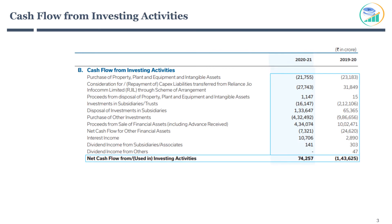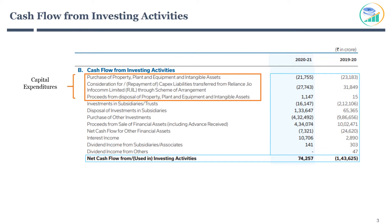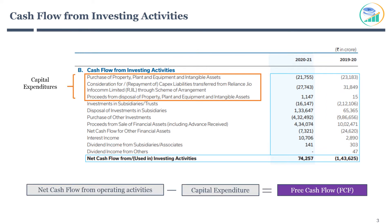Cash Flow from Investing Activities refers to activities related to investing to seek benefit at a later stage. This includes investment in assets like property, plant, equipment, and machinery. This kind of investment moves cash out and reduces the company's overall cash position. It also includes cash entering the company due to disposal of old assets like property, plant, and equipment. These expenses are called capital expenditure or CapEx. You can calculate free cash flow as net cash flow from operating activities minus capital expenditure.